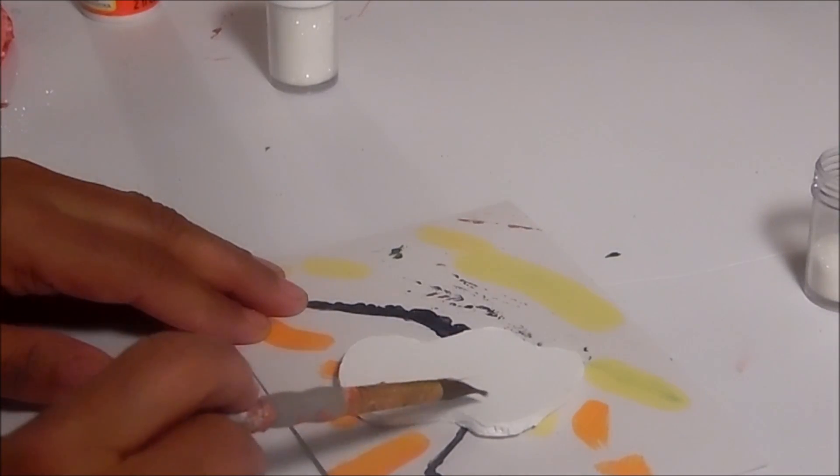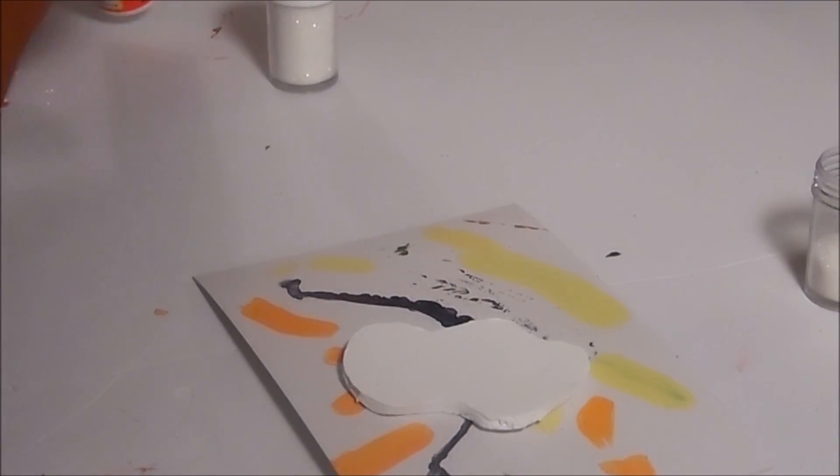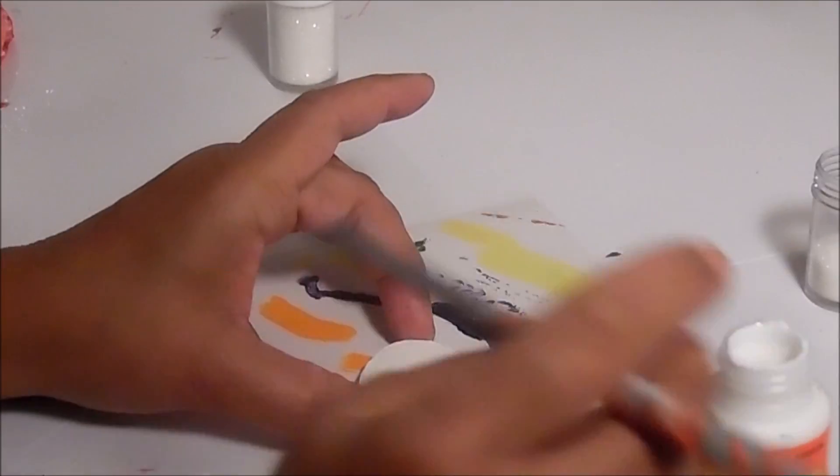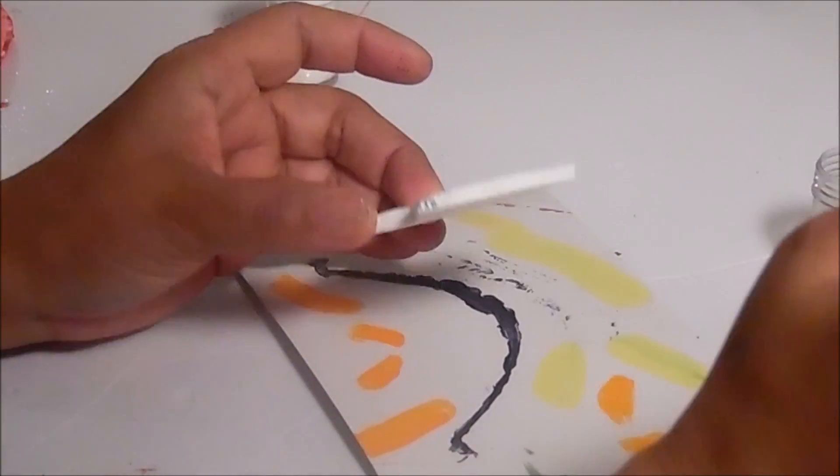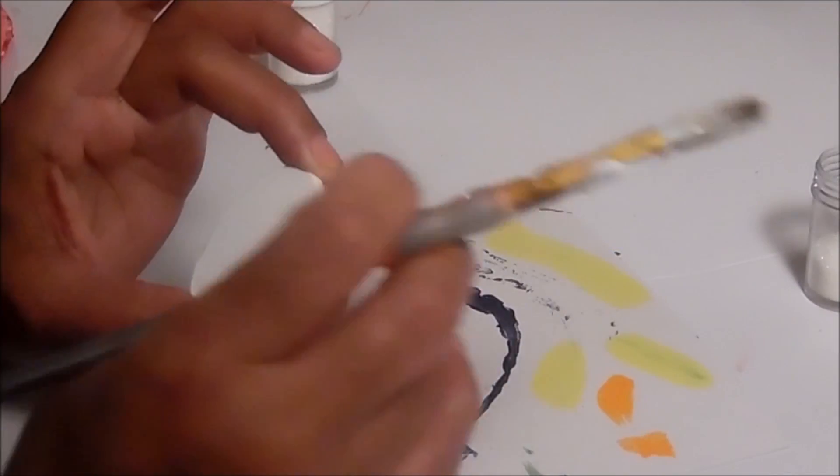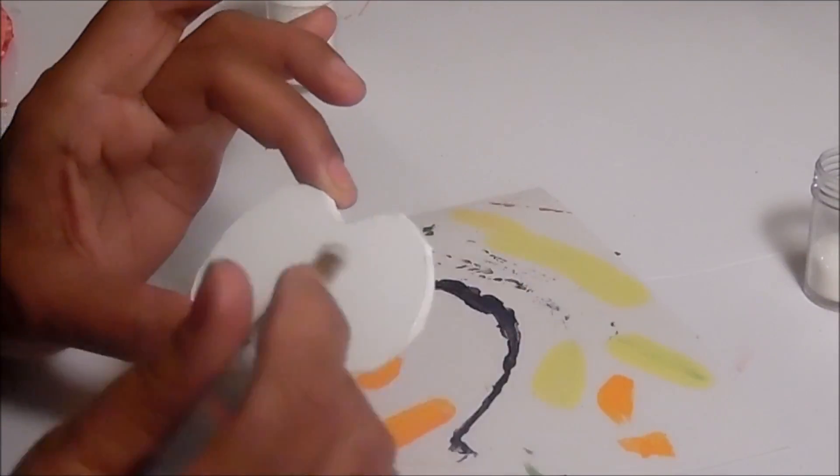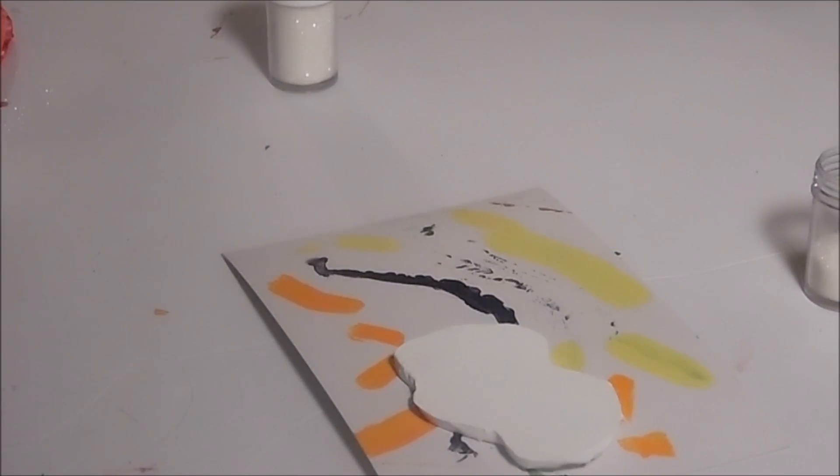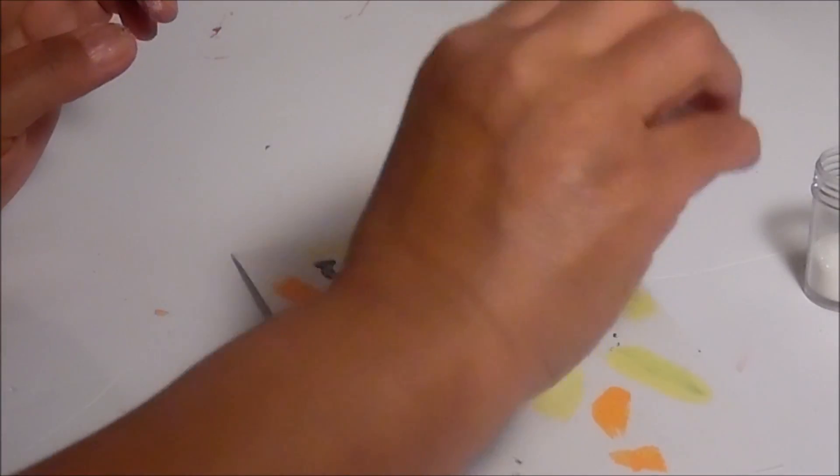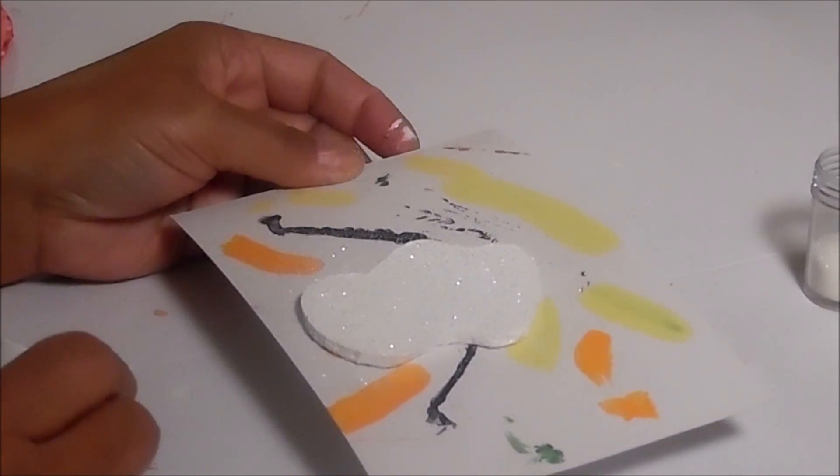What I'm going to do is start off with my cloud. I'm going to apply some more Mod Podge to it. I'm going to apply it to the edges as well. So my next step is to add some of this white glitter. I'm going to set it aside and let it dry.